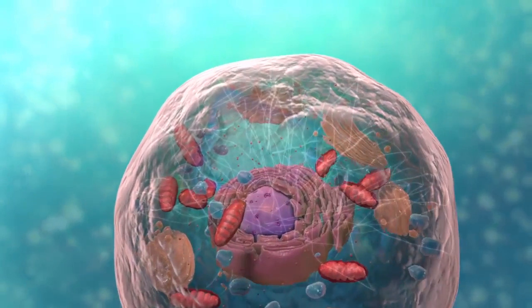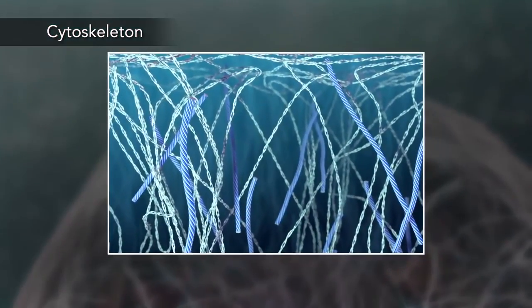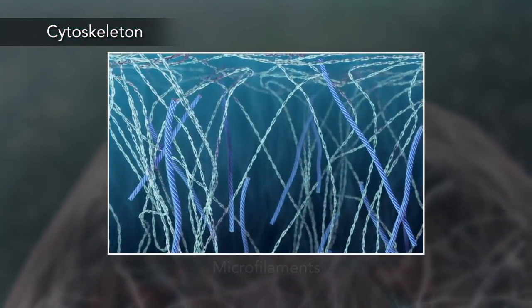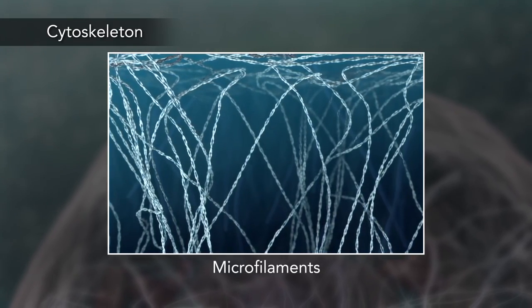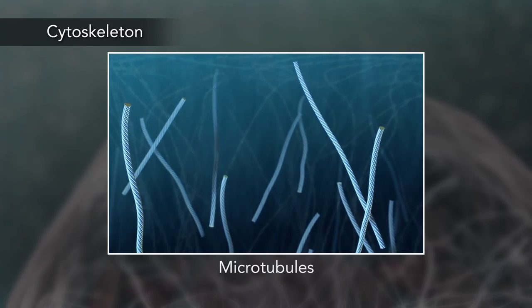Meanwhile, the cell maintains its shape through a cytoskeleton. The cytoskeleton includes the thread-like microfilaments, which are made of protein, and microtubules, which are thin, hollow tubes.